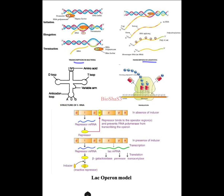You have to know about transcription in bacteria and transcription in eukaryotes. In both cases there is initiation, elongation, and termination. You can see RNA polymerase here, and the rho factor here; in eukaryotes you can see mRNA polyadenylation — these post-transcriptional changes happen in eukaryotes. Then the structure of tRNA: it has a T-loop, D-loop, variable arm, anticodon loop, AUG, and there is an amino acid arm. The translation diagram is also quite important.